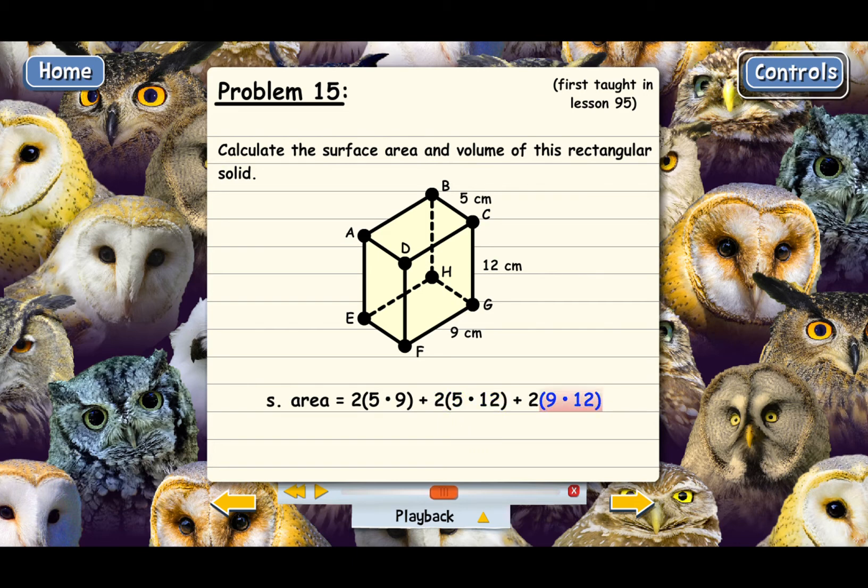Then 9 times 12, that's this face here DCGF, and then the one in the back ABHE. Both of those have an area of 9 times 12, so I multiplied that by 2.